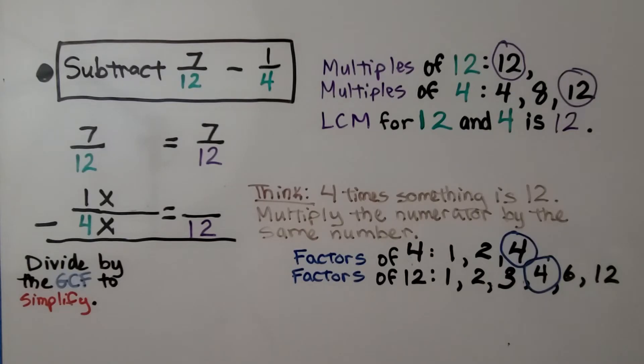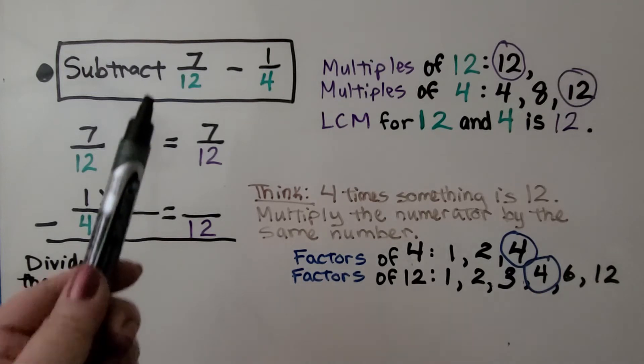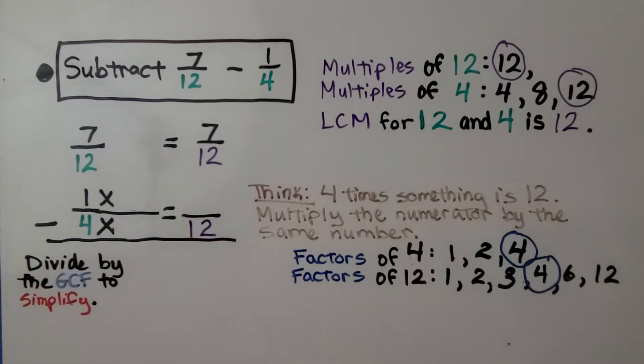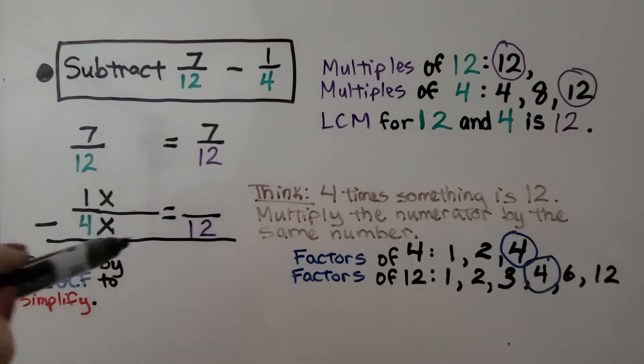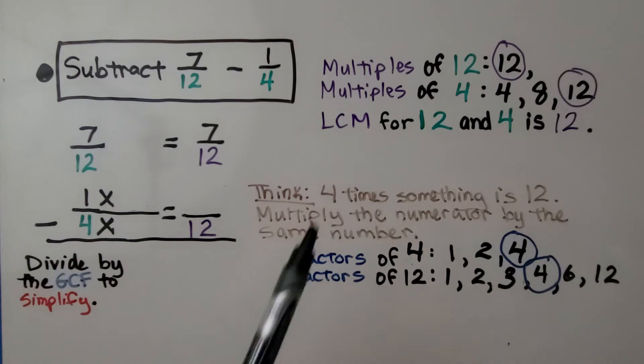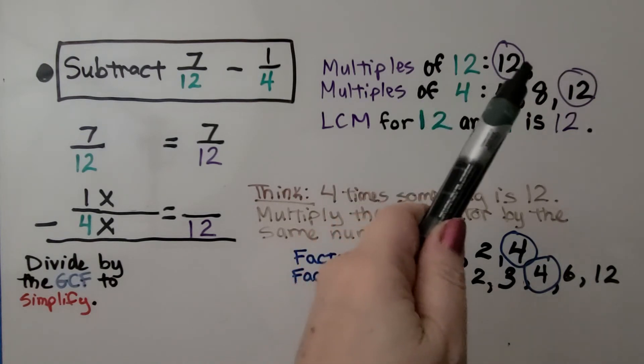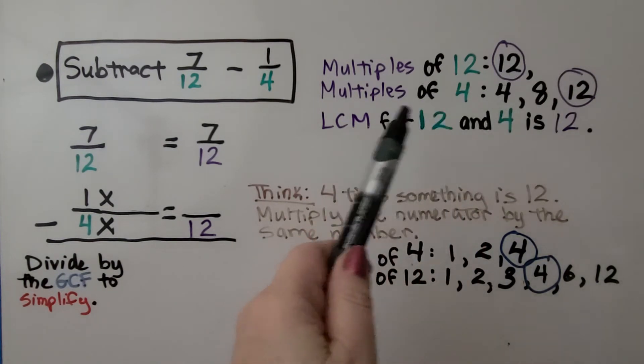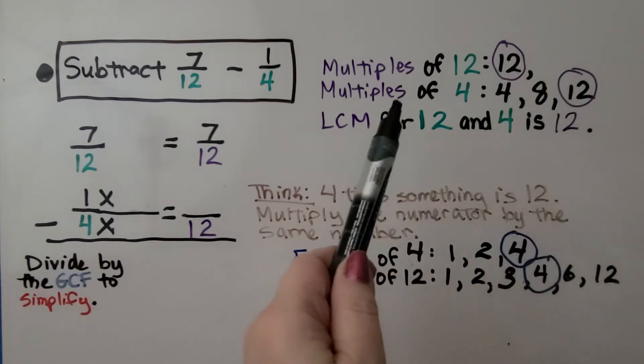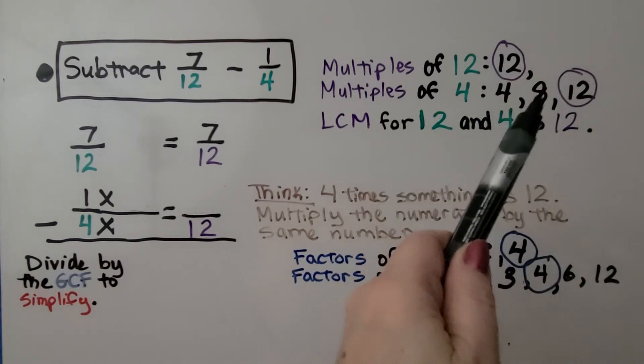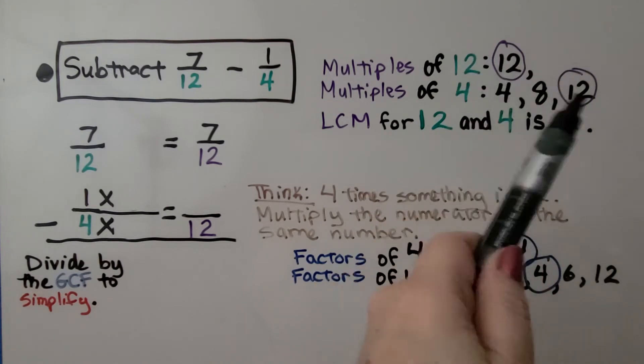Just as with addition, when we subtract fractions, they need a common denominator. We have 7/12 - 1/4. I stack them so I can give them common denominators. The multiples of 12 are 12, 24, 36, and so on. But we don't need to go that far because the multiples of 4 are 4, 8, 12. We see they can meet at 12.